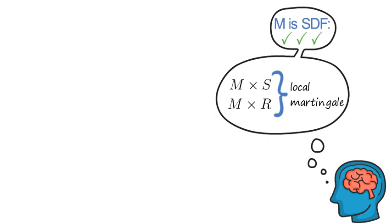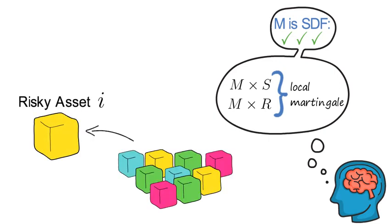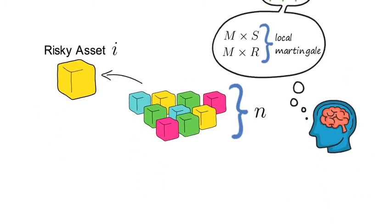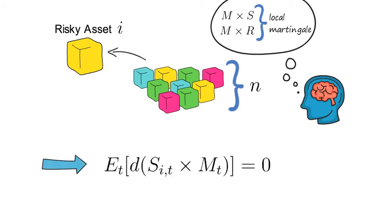Now it suffices if we pick just one risky asset i out of our set i element 1 to n. So we need to show or we need to work with the restriction that the conditional expectation of ds_i times m is 0.